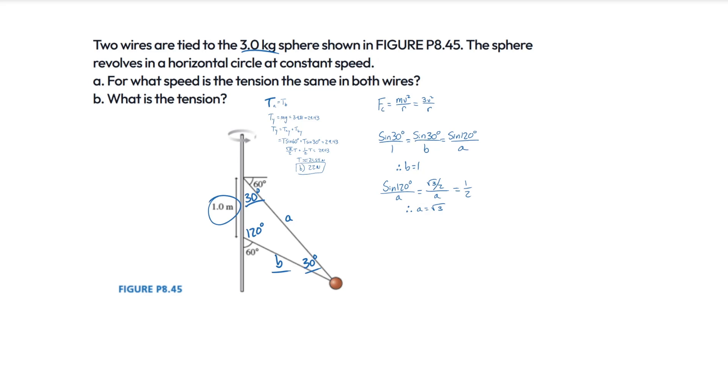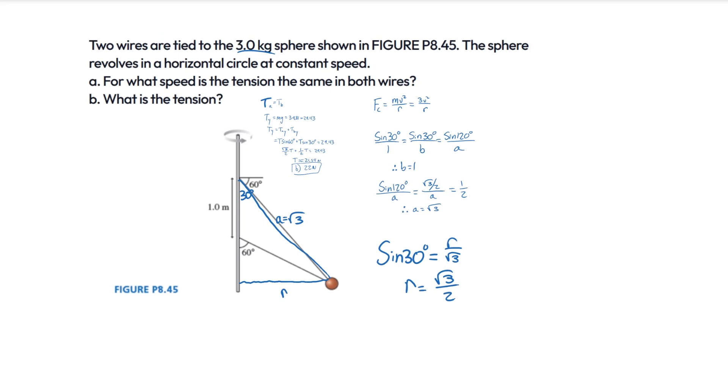So now, how do I find r? Well, let me just draw another triangle here. So we have this triangle right here. Now, my lines aren't exactly straight, but hopefully you get the idea there. What we have is sine of 30 degrees equal to opposite over hypotenuse. This will be r, and this here is the hypotenuse, which length we found to be the square root of 3. It's a. So we have r over a, or r over the square root of 3. So if we solve for r, sine of 30 is just going to be the square root of 3 over 2.